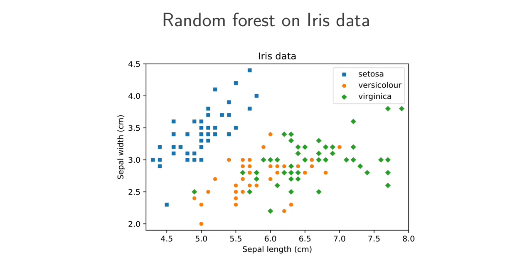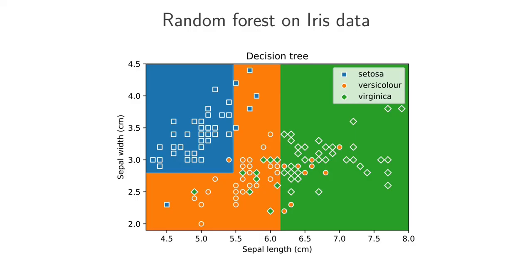If we apply a normal decision tree to this data, then we get output looking like this. So these are the decision boundaries.